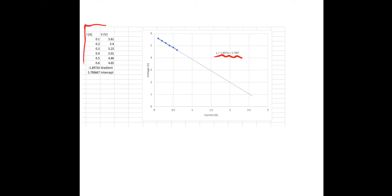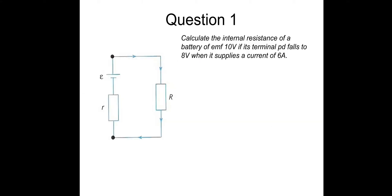That procedure and those results are what you would expect from this experiment. Now for Question 1: calculate the internal resistance of a battery of EMF 10 volts if its terminal PD falls to 8 volts when it supplies a current of 6 amps.